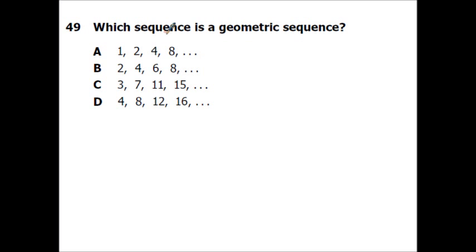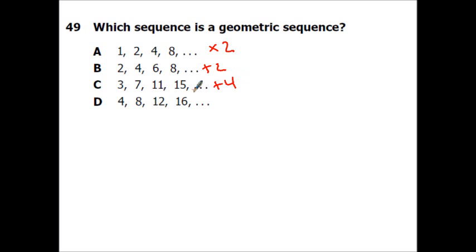Which sequence is geometric? Geometric means you're always multiplying by something. Sequence A goes 1, 2, 4, 8 — that's times 2. Sequence B goes 2, 4, 6, 8 — that's plus 2. The next goes 3, 7, 11, 15 — that's plus 4. And 4, 8, 12, 16 — also plus 4. So A is the only geometric sequence because it's multiplying.